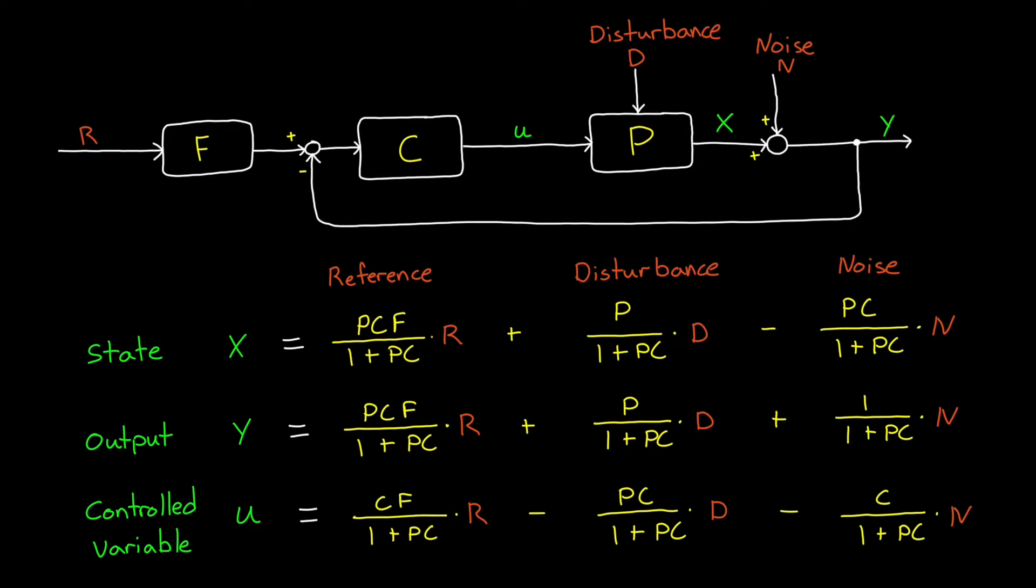We can just look and see which transfer function represents the relationship between any input and output that we're interested in analyzing. And what's great about this is that it gives us a way to change the feedback loop in particular locations such that we target the design criteria that we're interested in. Do we want to affect how sensitive the system is to disturbances? Then we need to look at the transfer function P over 1+PC. Do we want to affect how the system follows a reference signal? We need to look at PCF over 1+PC.